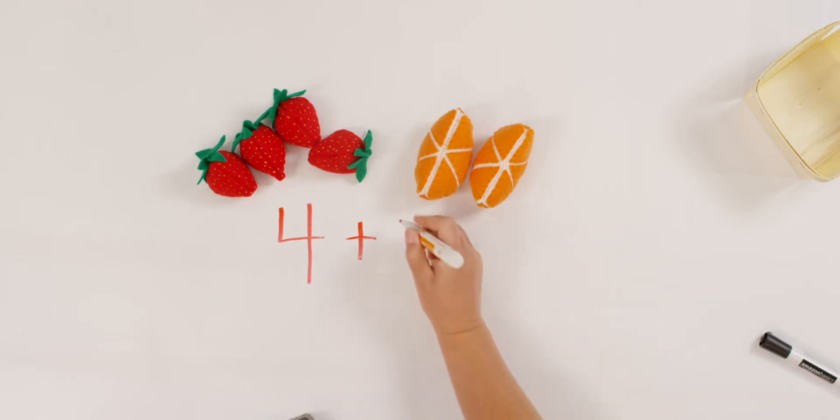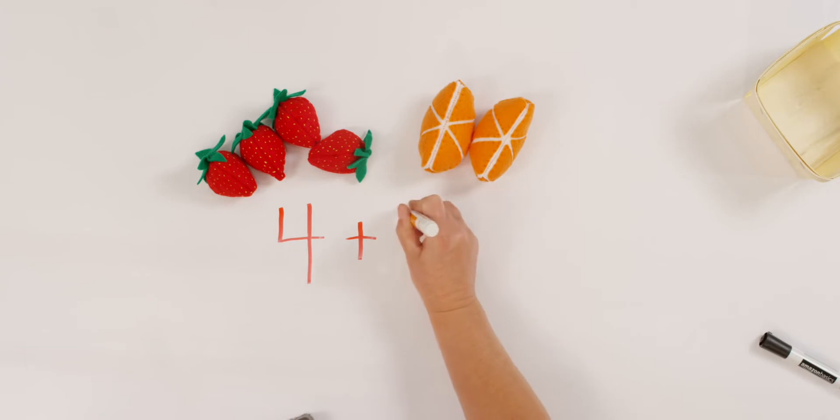Two. I'm going to change colors so you can see. Can you see that? How much do we have all together? Remember the trick I told you? If you don't know, you can count each one all together or put the biggest number in your head and count on. So let's do that.